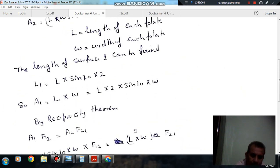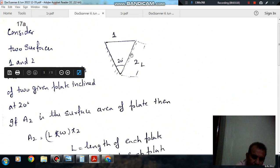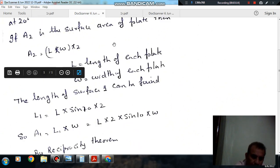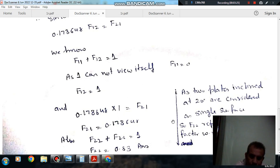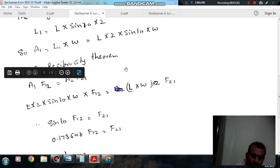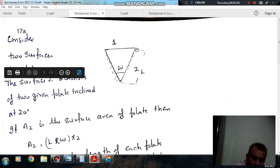Now we can apply another equation here for surface 2: F22 plus F21 equals 1. So now F21 represents the view factor of this plate to this plate. Why?